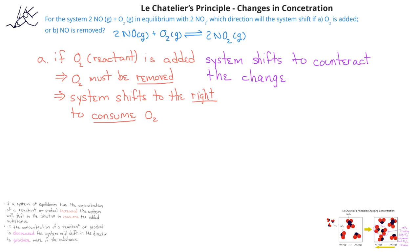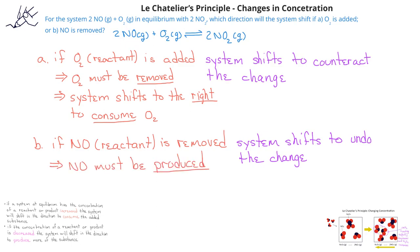What about the second example where NO is removed from the system at equilibrium? If NO, a reactant, is removed, the system will shift to the left to produce more NO and to decrease the original concentration of NO2.